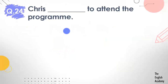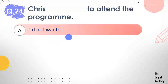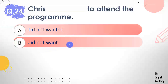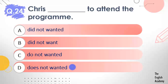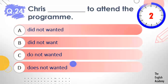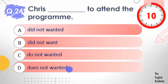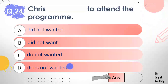Question number 24: Chris ___ to attend the program. Options: A) did not wanted, B) did not want, C) do not wanted, D) does not wanted. It is very clear that 'wanted' in options A, C, and D is incorrect. The answer is option B — did not want. Chris did not want to attend the program.